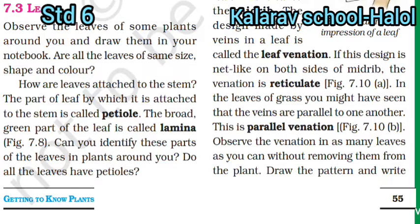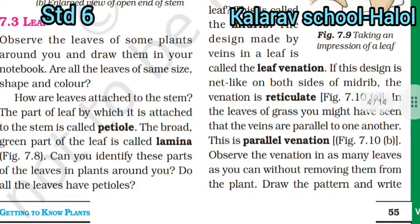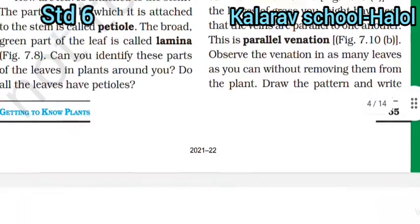Petiole means the part that is firmly hanging. The broad green part of the leaf is called the lamina. The design made by veins in the leaf is called leaf venation. If this design is net-like on both sides of the midrib, the venation is reticulate. In the leaves of grass, you might have seen that the veins are parallel to one another — this is called parallel venation.